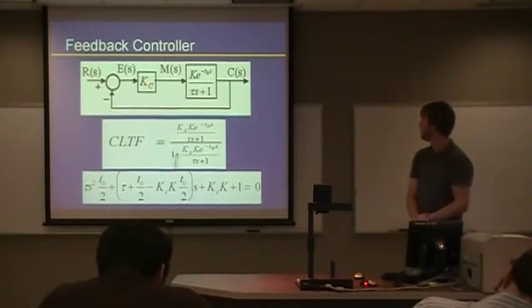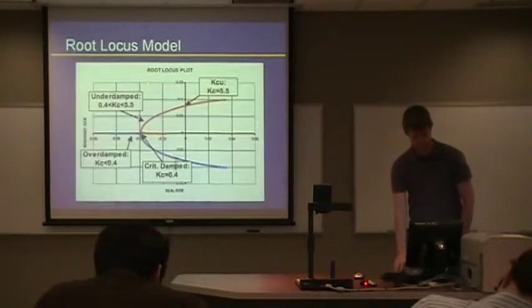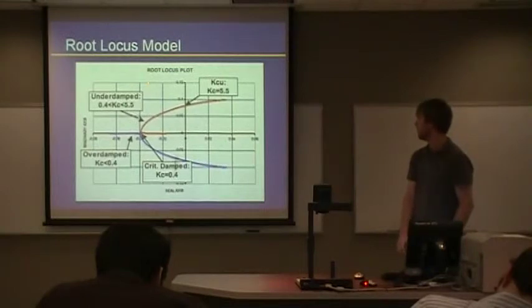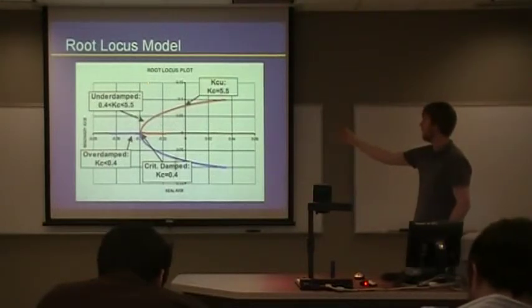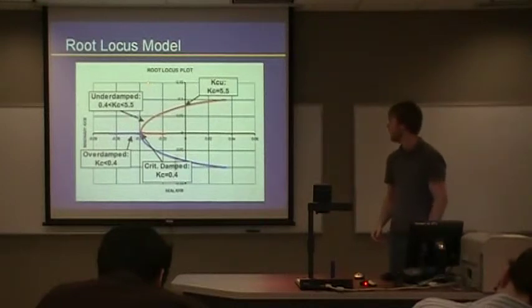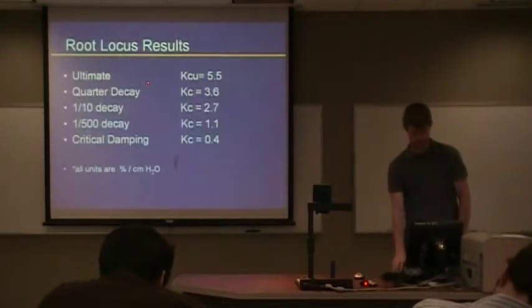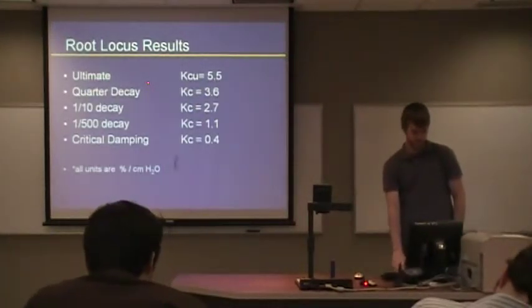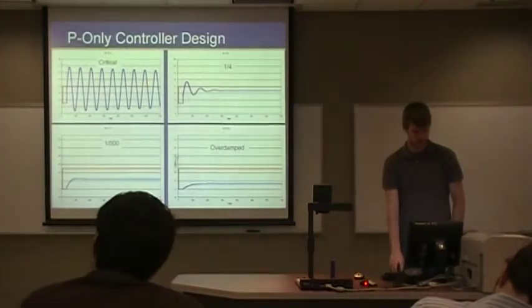Now, the schematics of our feedback controller. You're all familiar with this with our closed loop transfer function as such. And the characteristic equation shown at the bottom. Now, to show you our root locus model, we'll plot it in Excel. Crossing your imaginary axis gives you your ultimate KCU of 5.5. Underdamped in the region of .4 to 5.5. Overdamped anything below .4. And critically damped at .4. And like I said, there's the results. And all are in percent per centimeter water. Water head. And here's our feedback controller design.